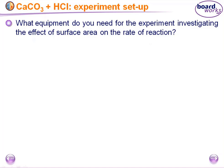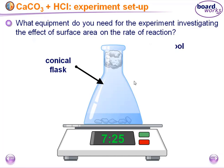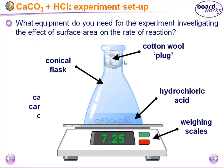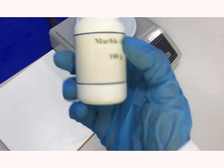To investigate the effect of surface area on the rate of reaction, we need a conical flask with a cotton wool plug, a balance, hydrochloric acid, and calcium carbonate chips in both small and large sizes. We use the cotton wool plug to prevent liquid from spitting out of the flask while allowing only carbon dioxide to escape.